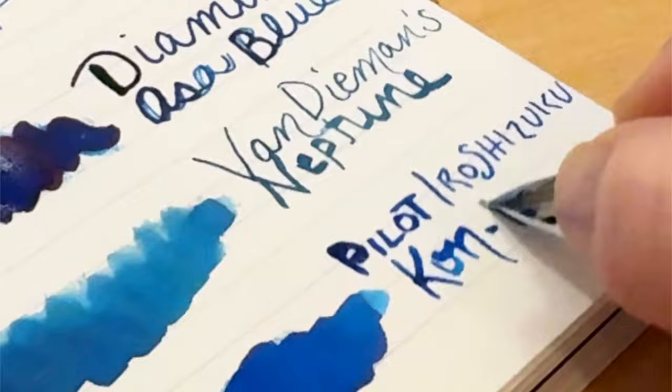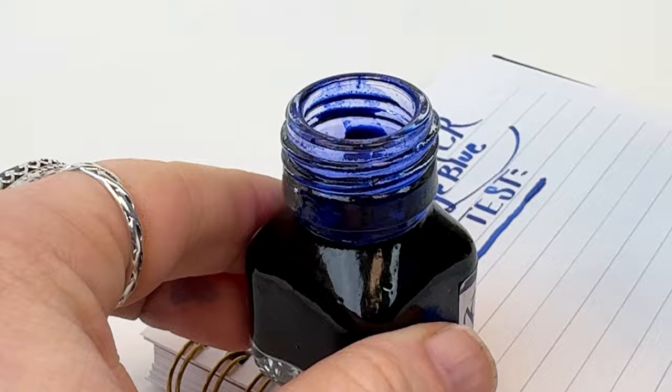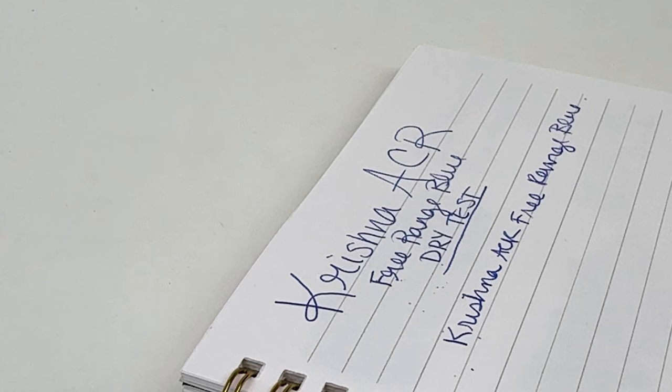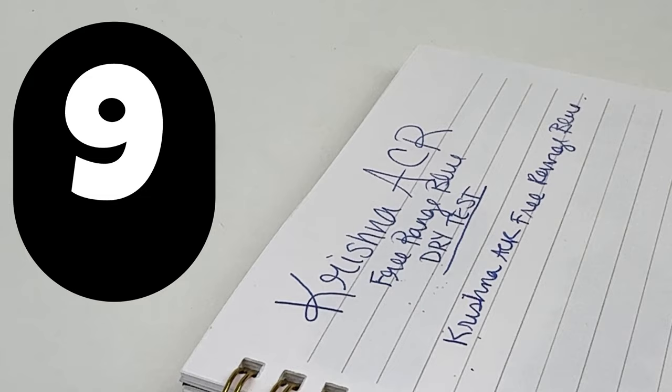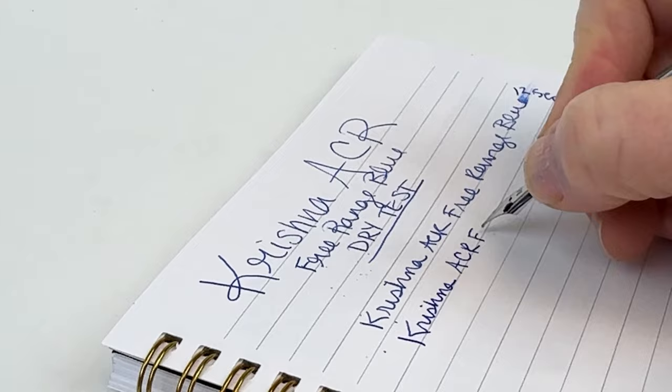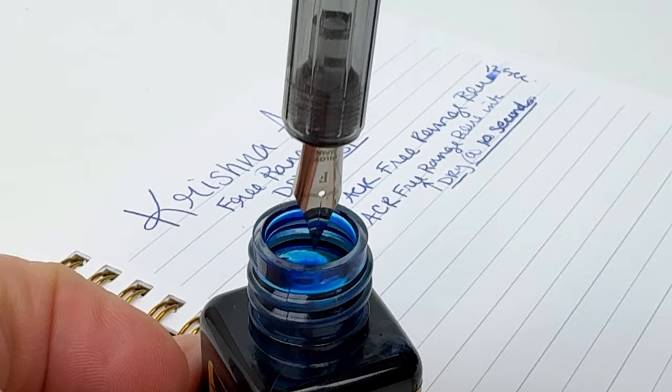We're going to use a medium-sized Iro Utsushi dip pen to make a dry test for each of these inks. To do that, we just put down a quick writing sample, and then we'll give it 10 seconds. Almost there, and then we take a dry cotton swab and we swipe across it to see if it's dry. If it's not dry, we try again and give it a little more time. If it is dry, we've determined the dry time.